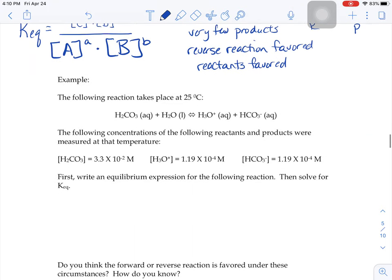So now let's see a couple of mathematical examples. It tells us here that this reaction between carbonic acid and water takes place at 25 degrees Celsius. It gives us some concentration numbers.